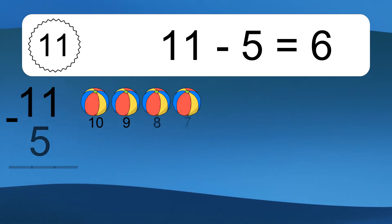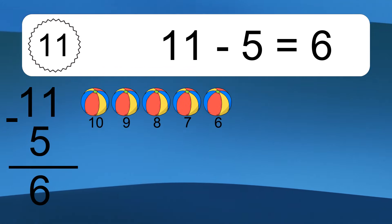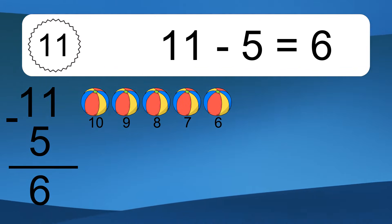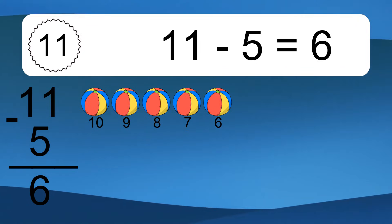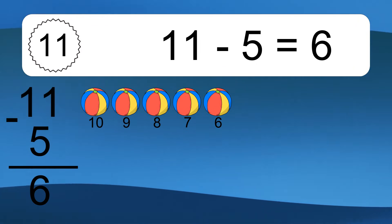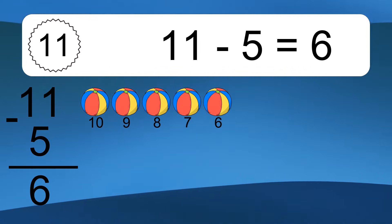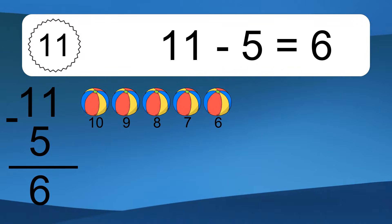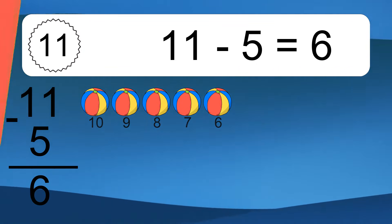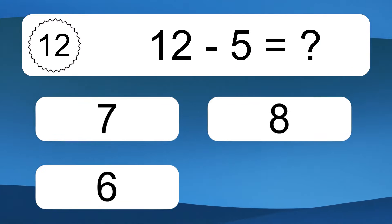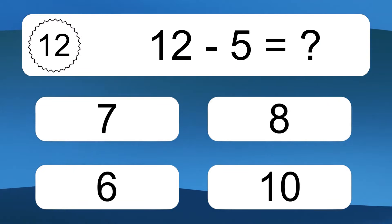11 minus 5 equals 6. Let's count it: 10, 9, 8, 7, 6. 12 minus 5 equals what?